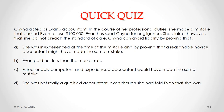Let's now have a look at this quick quiz question. Please pause this video so that you can consider the question. We need to determine what is the appropriate standard of care that applied to China as an accountant. The answer is C: a reasonably competent and experienced accountant would have made the same mistake. If a court finds that a reasonably competent and experienced accountant would have made the same mistake, there would be no liability.